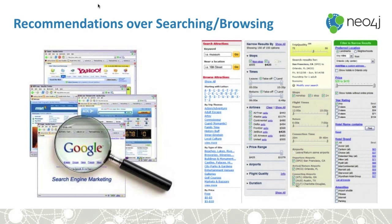Why do we want to do recommendations over searching or browsing? The reality is we have all this data from users — they've given us everything they like, all their friends, everywhere they've been, what kind of food they eat. Instead of asking them to search and search and search, we should just say: we know you. Thank you for giving us all this data. Now we're going to make something useful with it and give you a recommendation based on what we know.